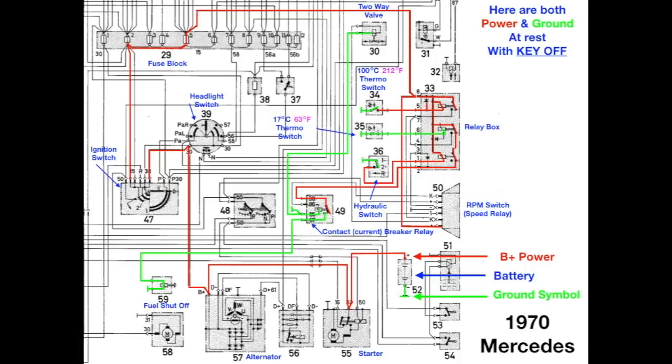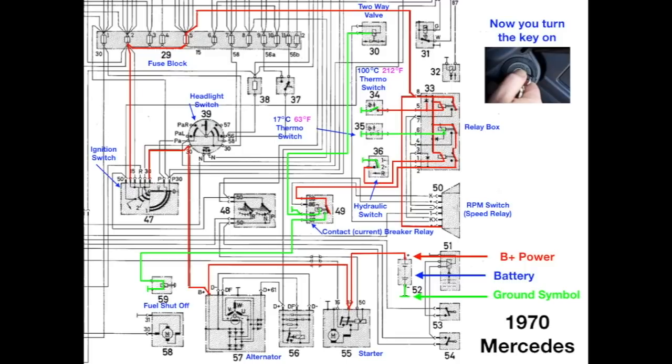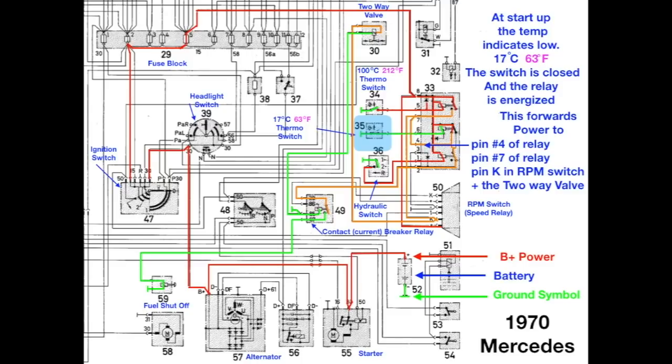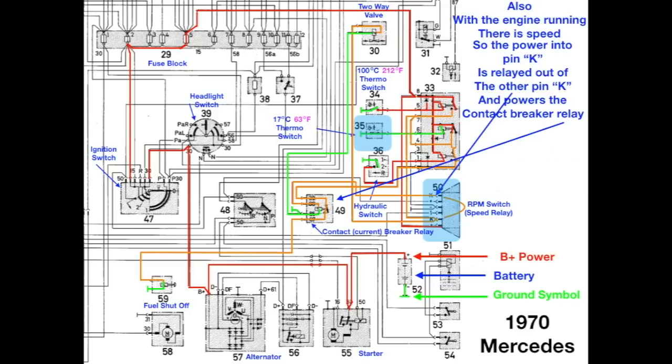What happens when we turn the key on? When you turn the key on, at startup, the temperature switch indicates it's at low temperature, because the engine hasn't warmed up yet. And, this switch is closed, and the number two relay is energized. This forwards power to pin number four of the relay, and pin number seven of the relay, and pin K of the RPM switch, and also goes up to the two-way valve.